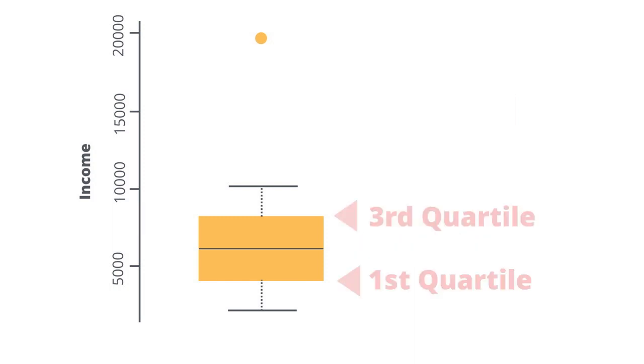Then we have the two lines that identify the first and third quartiles. Each of these are essentially the medians of the bottom half and top half of our data.